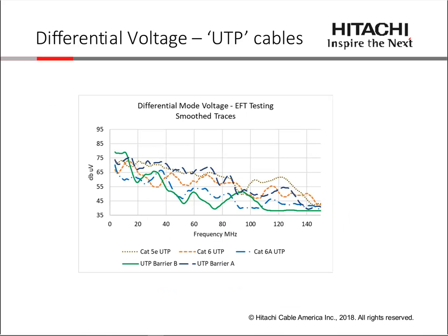We then performed the same test measuring differential-mode voltages. Although common-mode coupling was very similar across all cable designs, we did see differences in differential-mode coupling. The two barrier designs seemed to bookend the high and low end of coupling, and the UTP cables tended to reside somewhat in the middle. This is a significant result — since common modes were so similar, yet there were meaningful differences in the differential-mode voltage coupling.